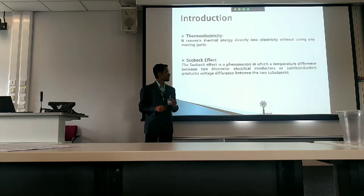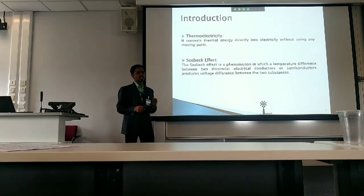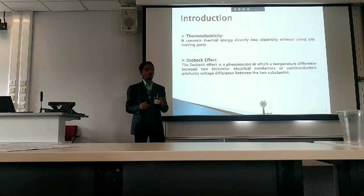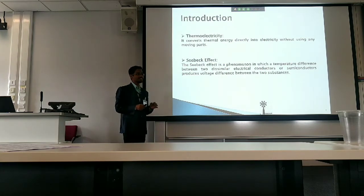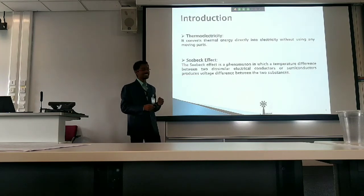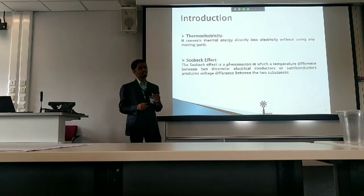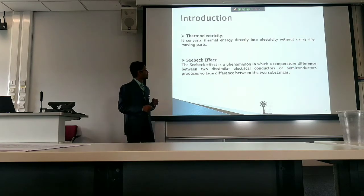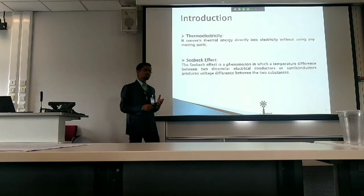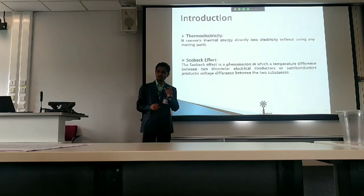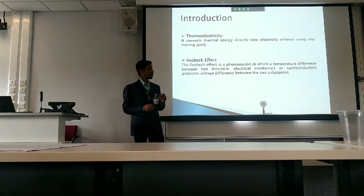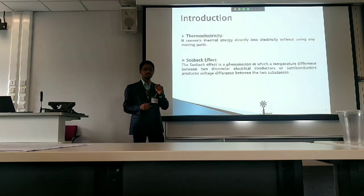In 1821, German physicist Thomas Johann Seebeck observed that when a compass needle is placed in a closed loop formed by two different metals, along with a temperature difference between their junction joints, the compass needle deflects. This result — initially observed in 1794 by Italian scientist Alessandro Volta and independently rediscovered in 1821 by Thomas Johann Seebeck — was named the Seebeck effect. The Seebeck effect states that a temperature difference between two dissimilar electrical conductors or semiconductors produces a voltage difference between the two substances. A positive numerical value of the Seebeck coefficient implies a p-type thermoelectric leg, whereas a negative value implies an n-type thermoelectric leg. Combining a p-type and an n-type thermoelectric leg gives a thermoelectric couple.